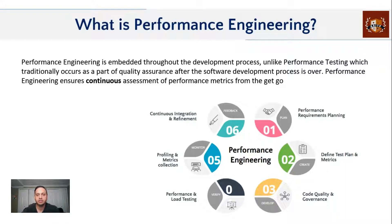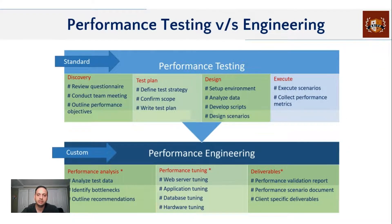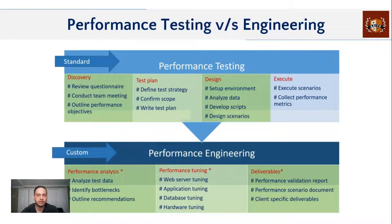Looking at responsibilities: in performance testing, you review questionnaires, hold team meetings to figure out non-functional objectives, define the test plan, confirm scope, design and develop scripts, do parameterization, execute tests, collect performance metrics, share results, and sign off. If there are bugs or further changes needed, you send it back to dev. That is where performance testing normally ends.